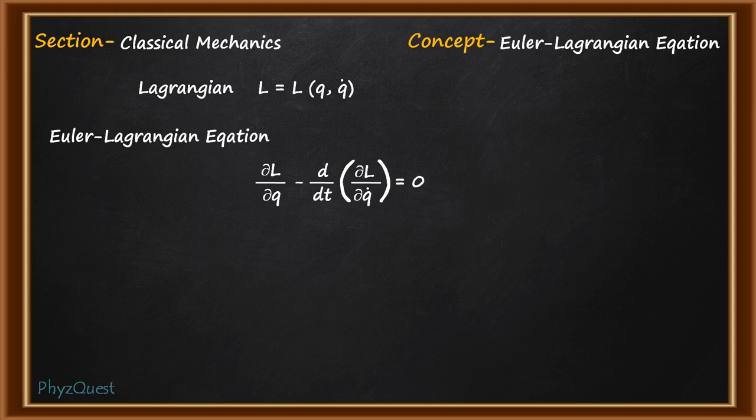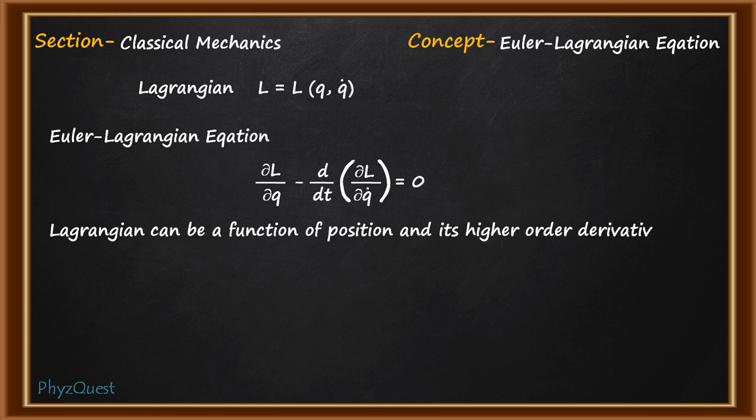The issue is out of the four options given some of them contain terms which are second order derivative of the position. So does that mean those options are wrong? No. Lagrangian can have higher order derivative of position coordinate but in that scenario this conventional Euler Lagrangian equation will not be valid.